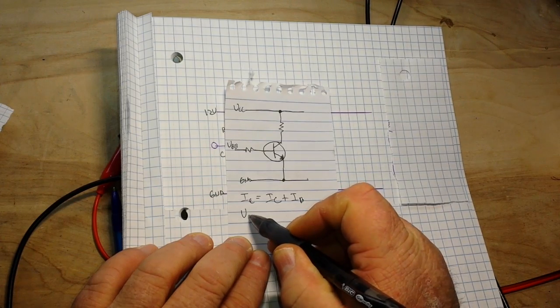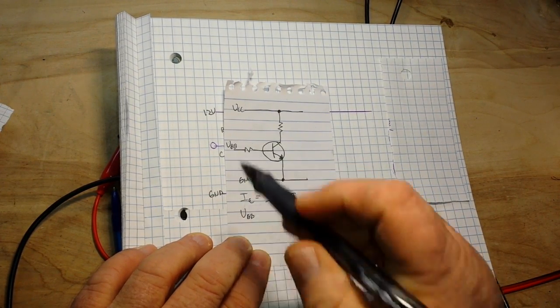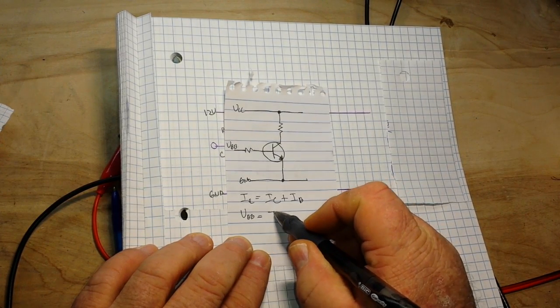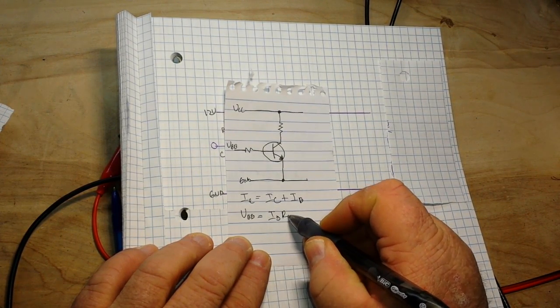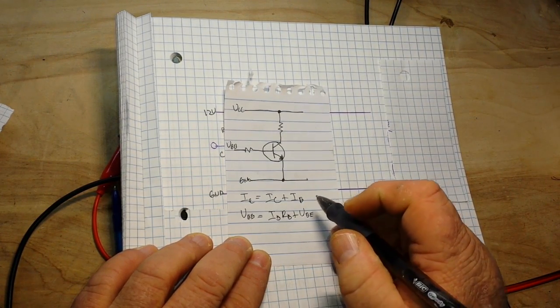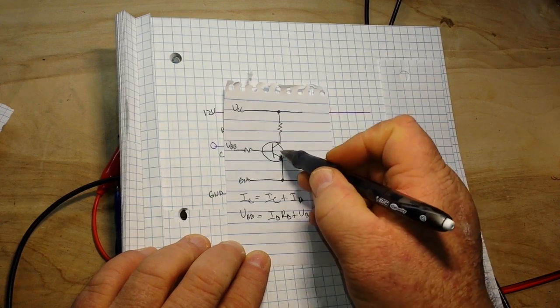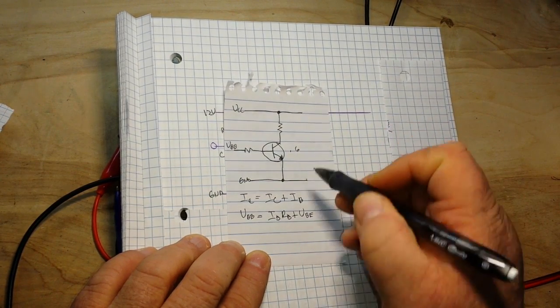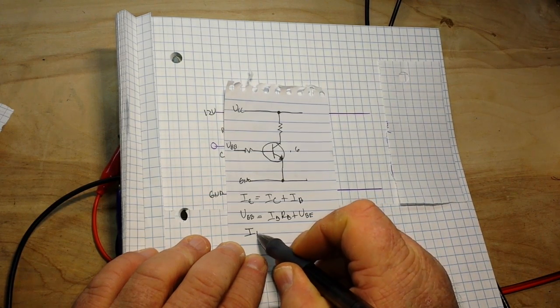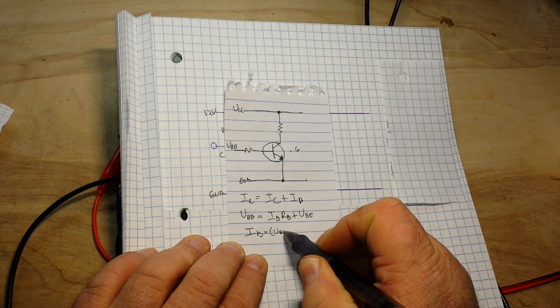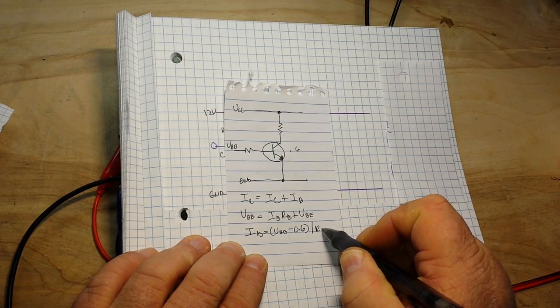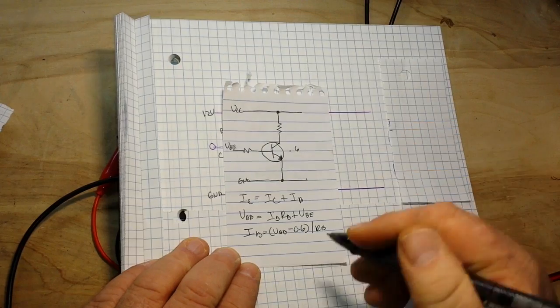Then we can also sum our voltages. We can say VBB is going to be equal to IB times RB plus VBE. We also know that there is going to be about a 0.6 voltage drop there, and if we rearrange things a little bit, we can say that IB equals VBB minus 0.6 divided by RB.